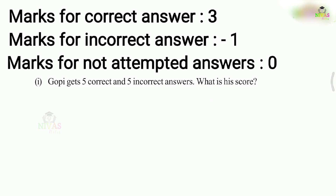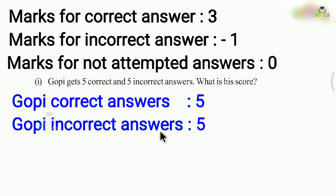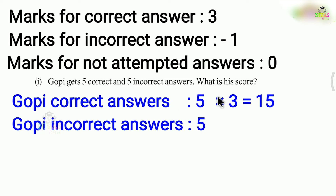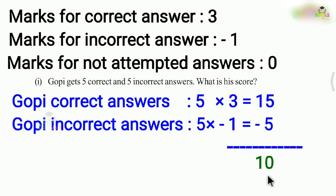Gopi attempted all 10 questions with 5 correct and 5 incorrect answers. For 5 correct answers, each worth 3 marks: 5 into 3 is 15 marks. For 5 incorrect answers, each is minus 1: 5 into minus 1 is minus 5. So the total score is 15 plus minus 5, which equals 10.